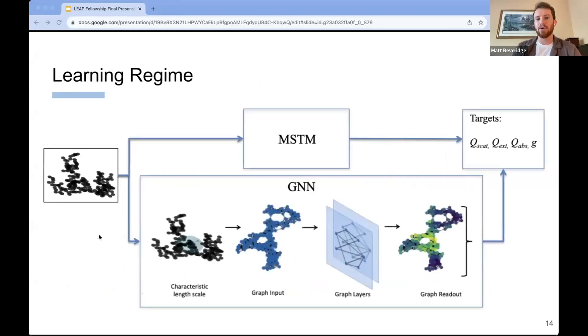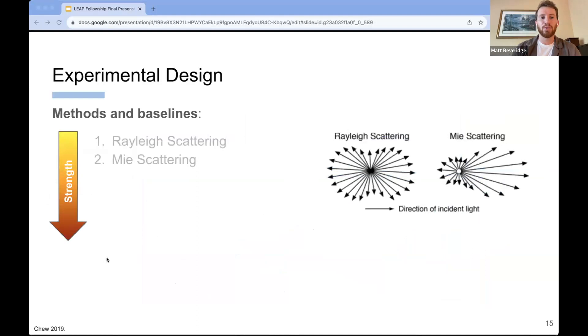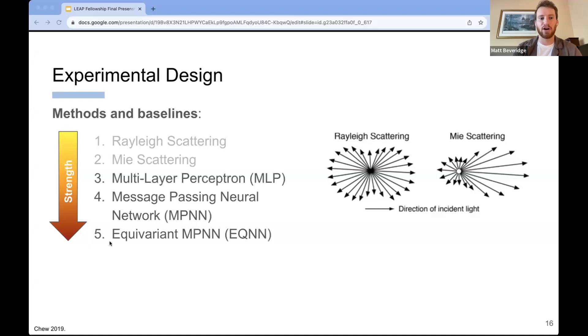As a whole pipeline, what we're trying to do is reduce the computational complexity of the modeling of these optical parameters. One of the common methods for modeling these analytically would be MSTM, multi-sphere T matrix. In our regime, we are instead trying to train a network in a supervised manner to mimic the performance of MSTM. In doing so, we have a couple of baselines that we compare against. Some of the weaker baselines are Mie theory and Rayleigh scattering theory. These are pure solutions to Maxwell's equations. And then slightly stronger baselines that we're comparing against are a multi-layer perceptron, like prior works.